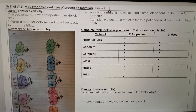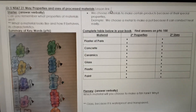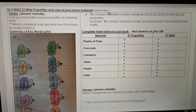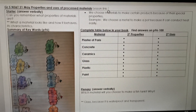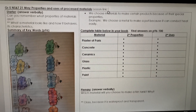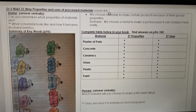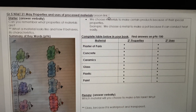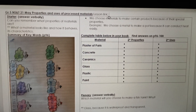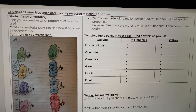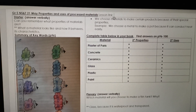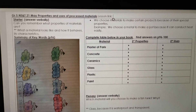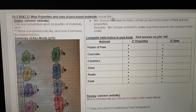Starter — answer verbally. Verbally means don't write the answer down, you only say it to yourself. I want you to try and remember what properties of material are. Can you remember what it means? Properties is what a material looks like and how it behaves. So basically, it's characteristics.